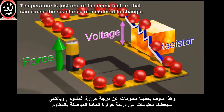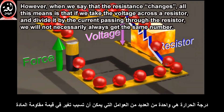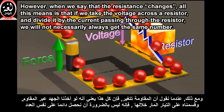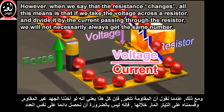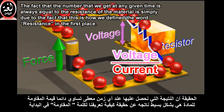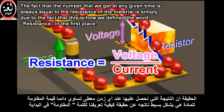Temperature is just one of the many factors that can cause the resistance of a material to change. However, when we say that the resistance changes, all this means is that if we take the voltage across a resistor and divide it by the current passing through the resistor, we will not necessarily always get the same number. The fact that the number we get at any given time is always equal to the resistance of the material is simply due to the fact that this is how we defined the word resistance in the first place.